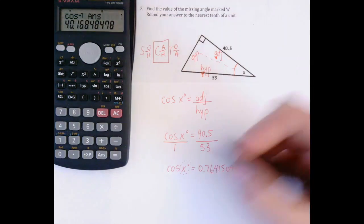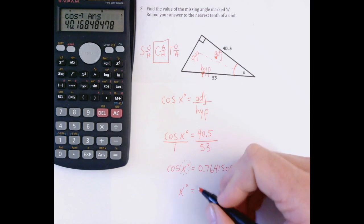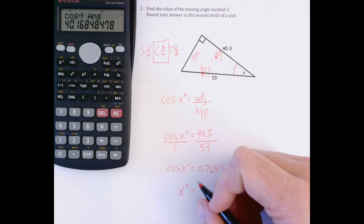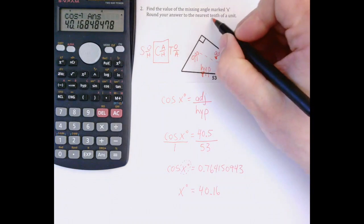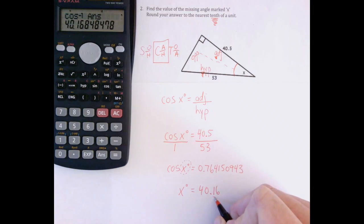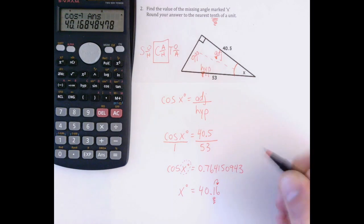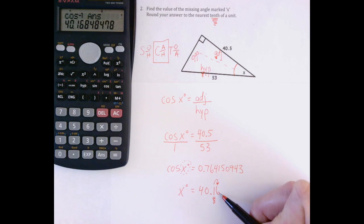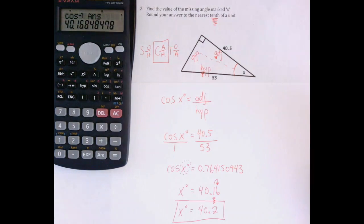As soon as I press equals, it gives me 40.16 for x degrees. Since the question asks for the nearest tenth, here is the tenth place, and I need to go one place beyond to round. One place to the right, if this is 5 or above, we round this number up. Since 6 is above 5, x degrees rounds to 40.2, and that's the answer.